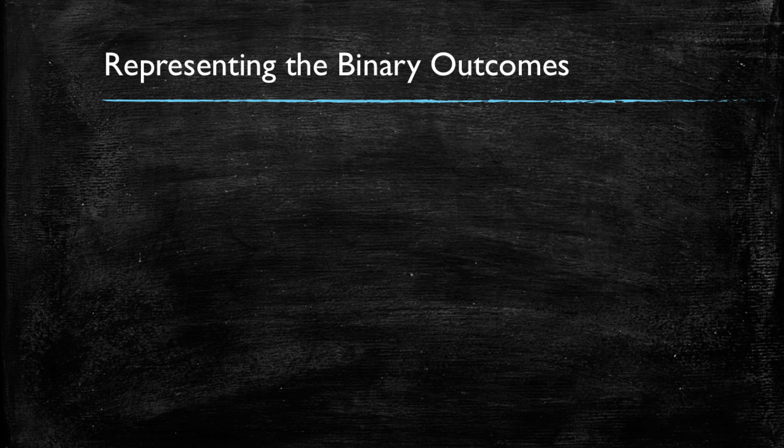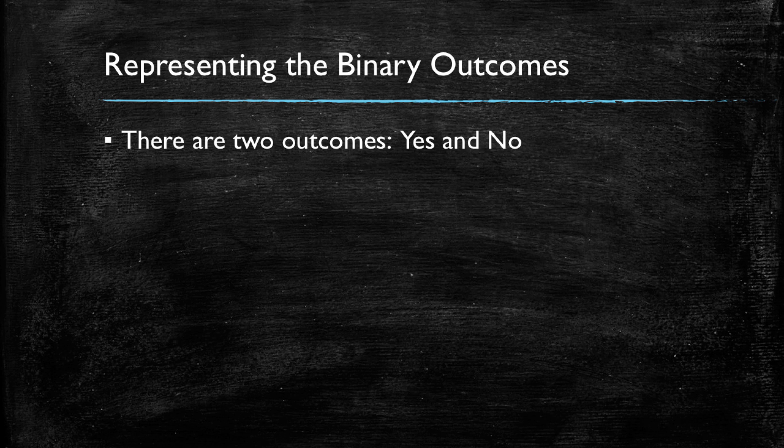So how could we represent binary outcomes? Recall, these are variables that only have two potential values, usually indicating if an observation belongs to a certain category or has satisfied some particular attribute. It's going to be a yes-no question.